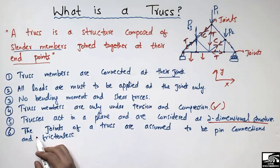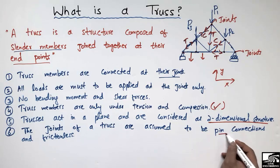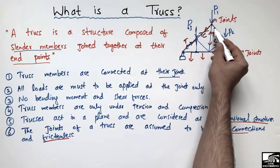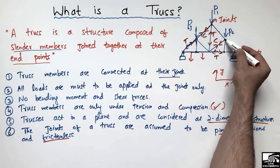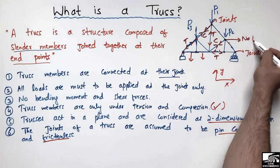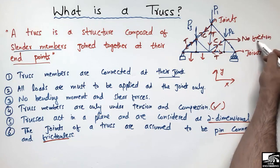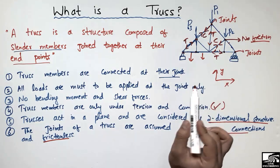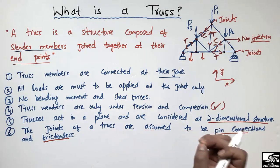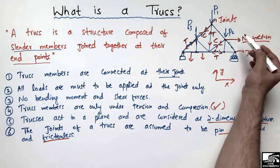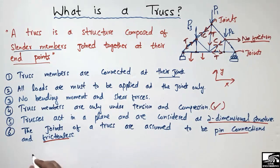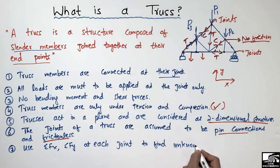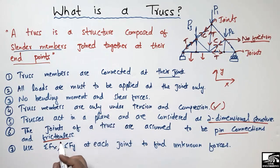The sixth point states that the joints of a truss structure are assumed to be pin connections and frictionless. All joints are assumed to have no friction. It should be kept in mind that joints of a truss should always be considered as frictionless pin connection joints.